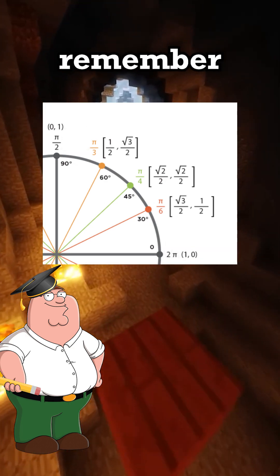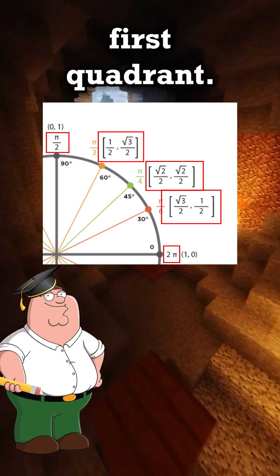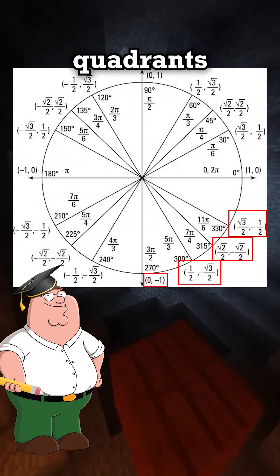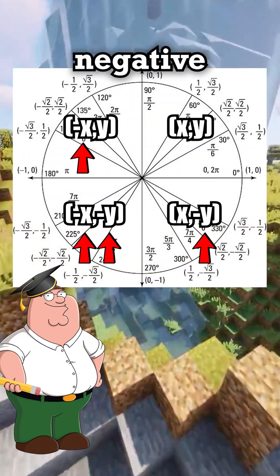Instead of memorizing everything, just remember the key angles in the first quadrant. These values repeat in all four quadrants, but some become negative depending on direction.